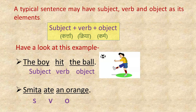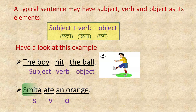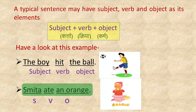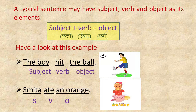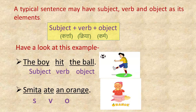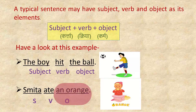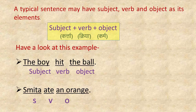We can take one more example. Here, 'Smitha' is the subject, 'hit' is the verb, and 'an orange' is the object.